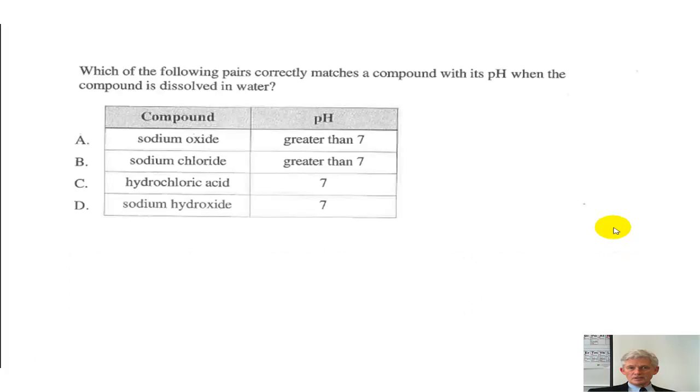And then the last question. Which of the following pairs correctly matches a compound with its pH when the compound is dissolved in water? These are the four compounds. Sodium oxide gives you a pH of greater than seven. Sodium chloride greater than seven. Hydrochloric acid, seven. And sodium hydroxide, seven. Which one of those would actually be true?